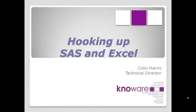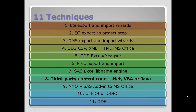Hello, I'm Colin Harris from Nowhere, and this is continuing the series on hooking up SAS and Excel. This is talking about the eighth technique in the series. As you can see, there are 11 different techniques here, and the rest of the series covers all the other techniques listed. This particular part is going to talk about the eighth technique: third-party control code.